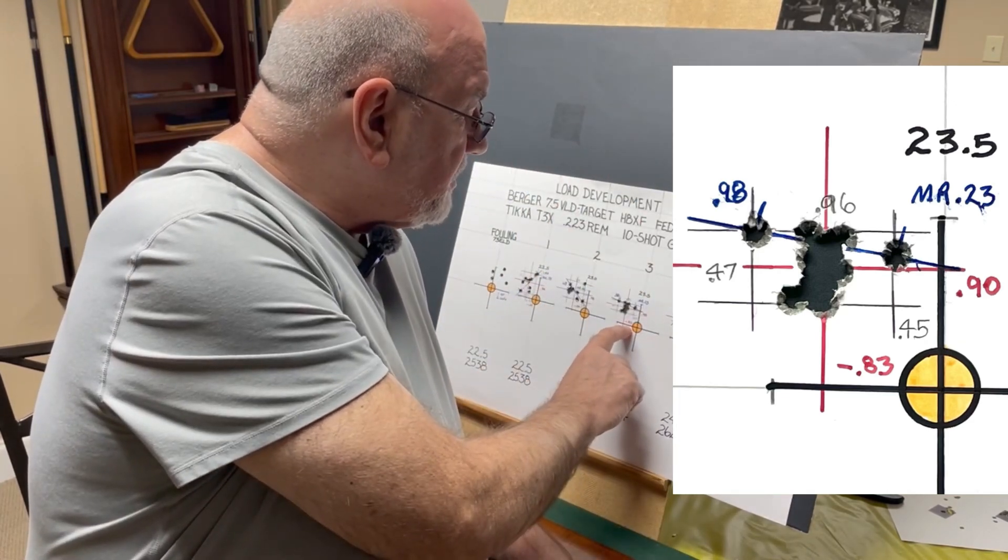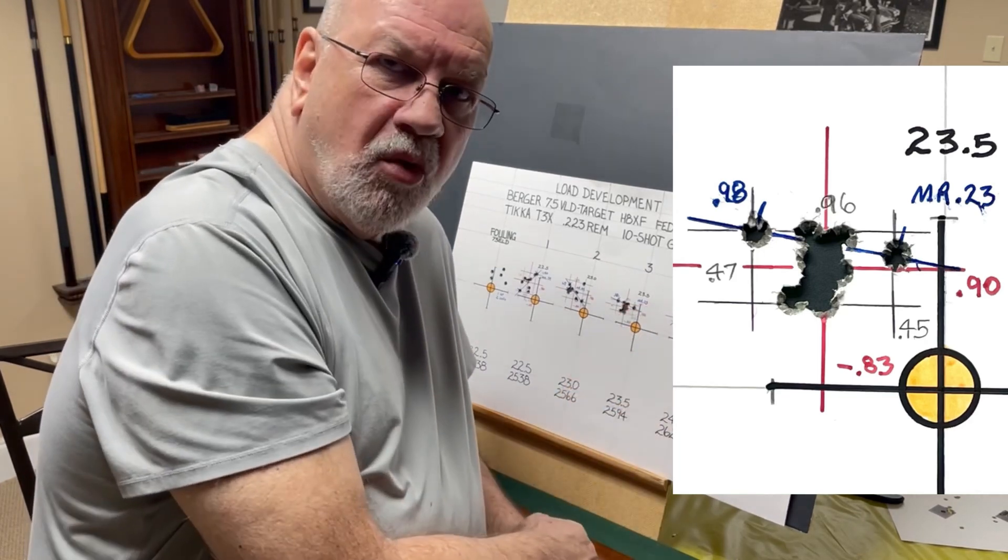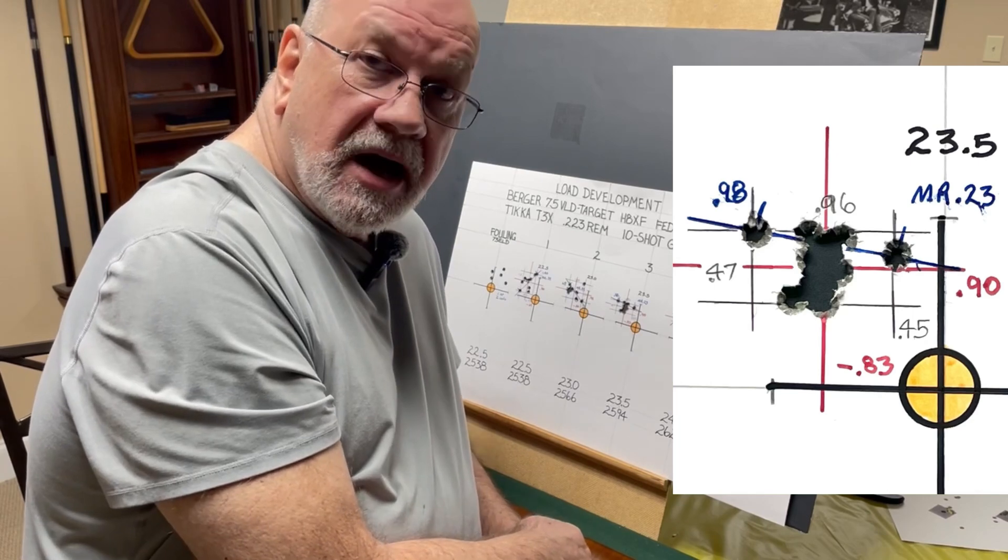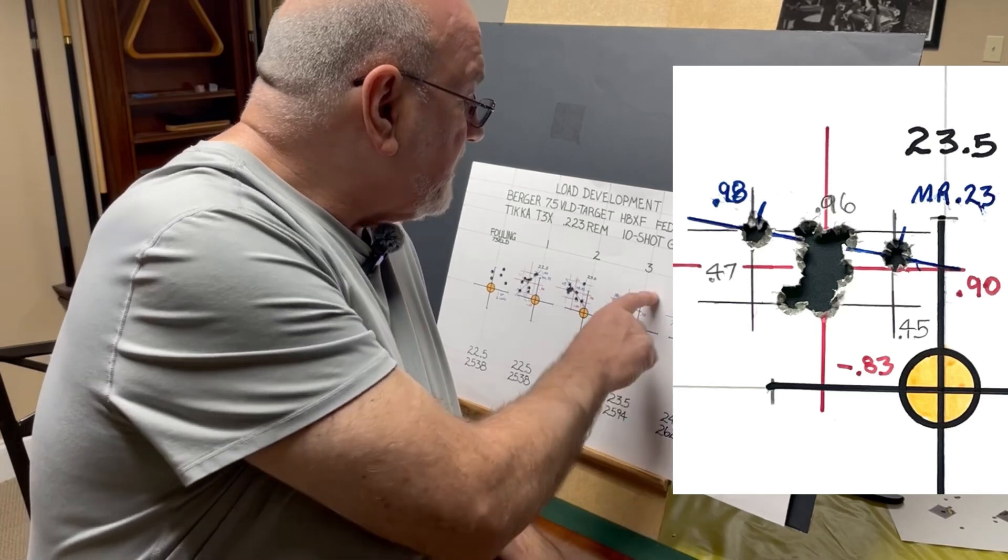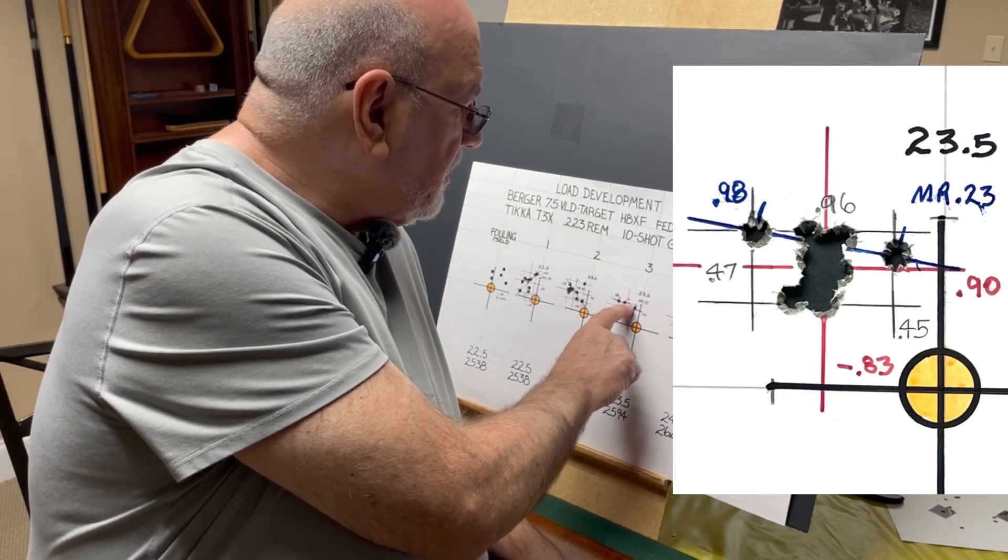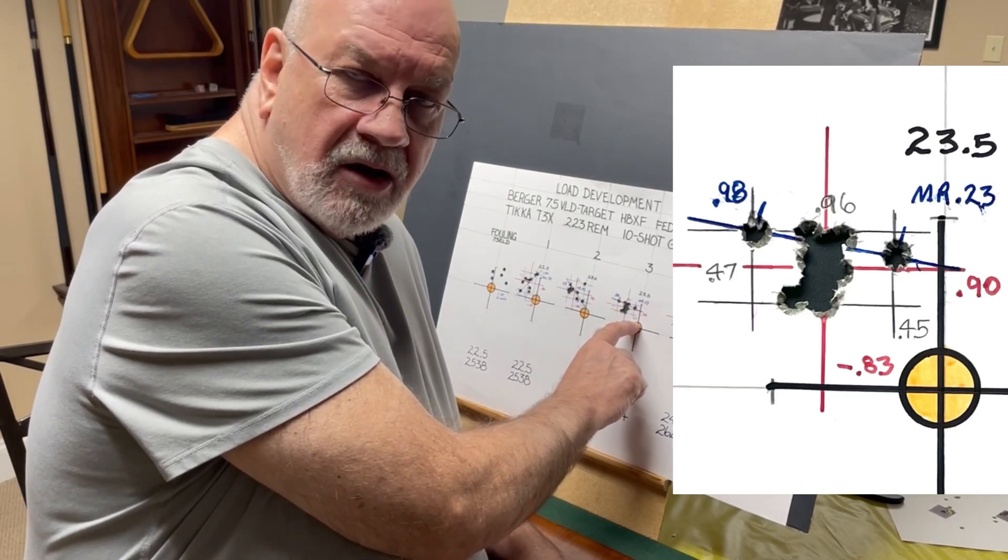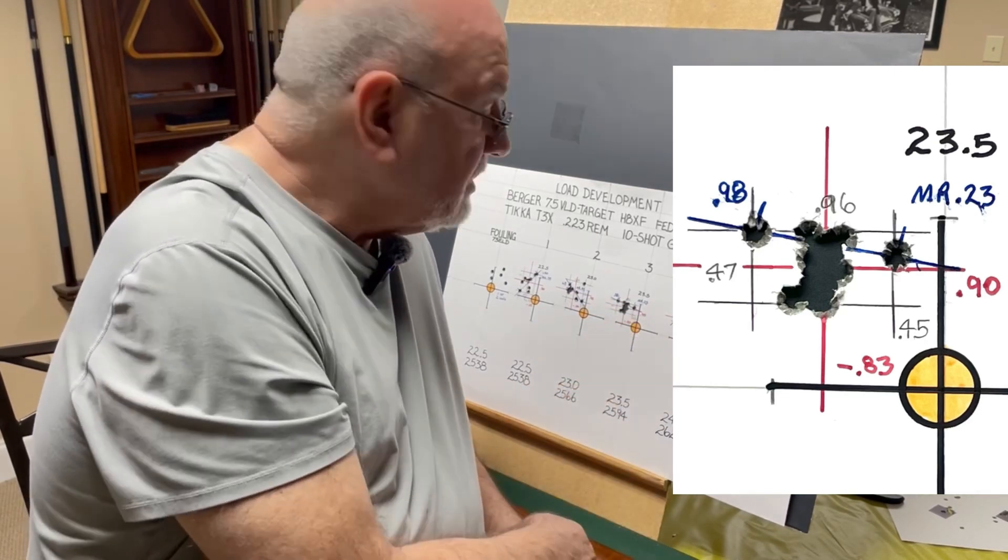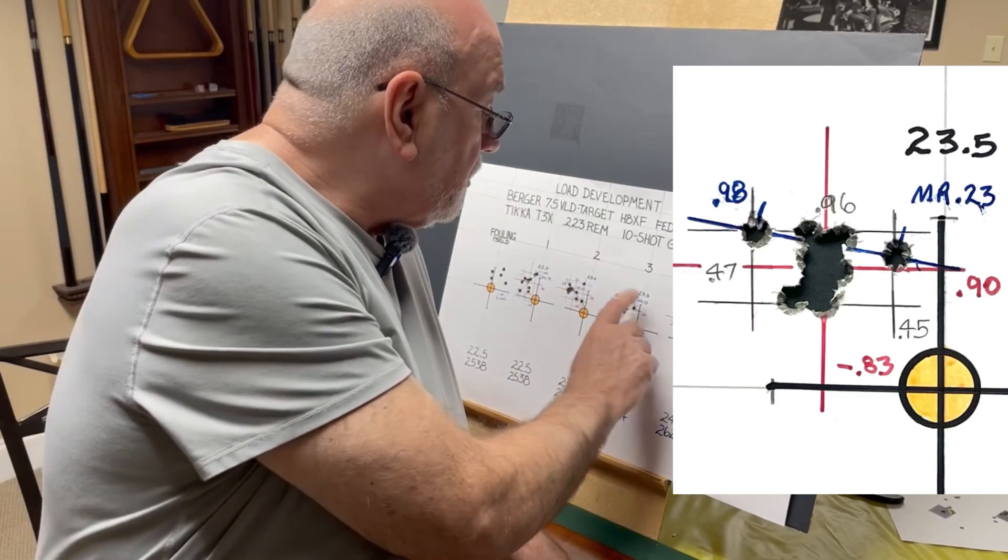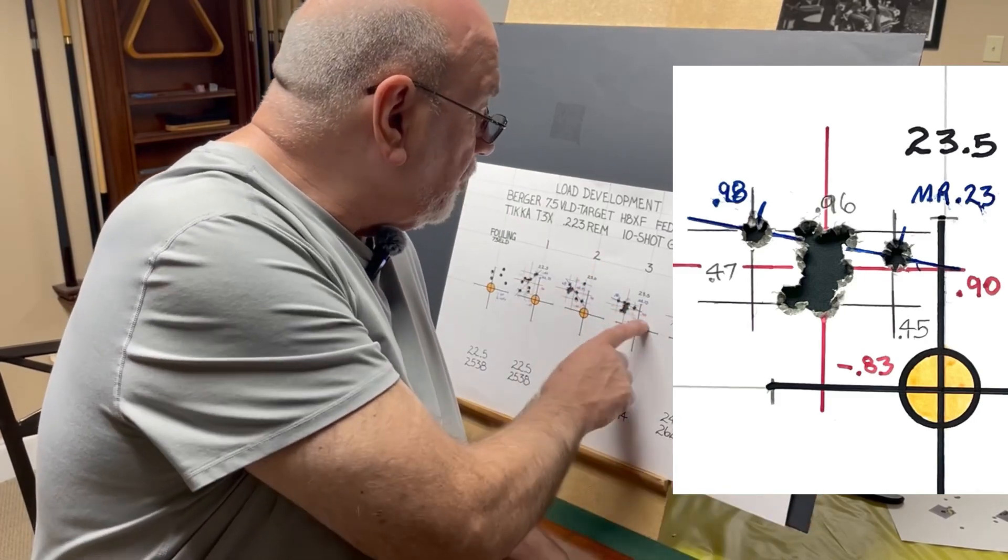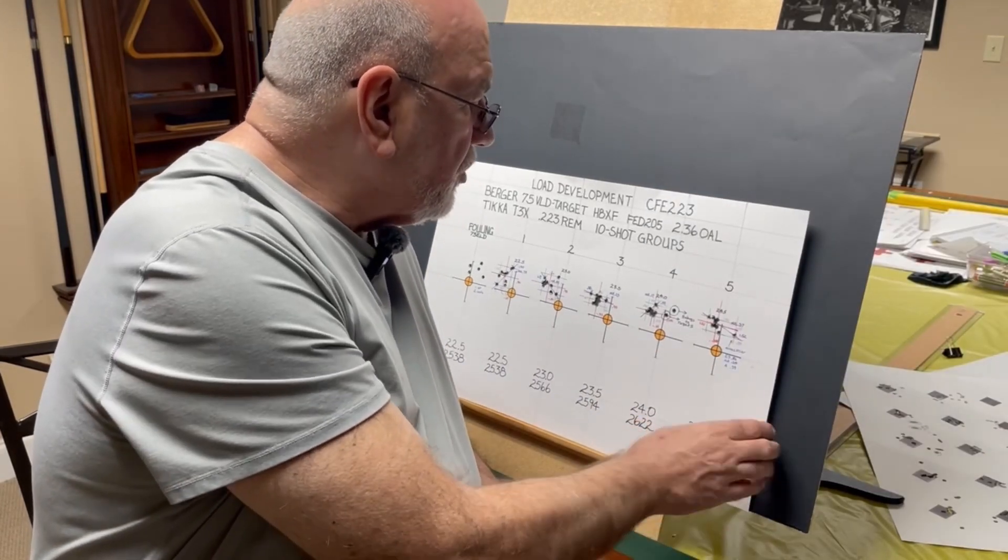We're shooting 0.83 to the left and 0.9 inches high. We have a mean radius of 0.23 which gives you an average group size of 0.46, so we're really starting to tighten up here. That's also confirmed by the area which is 0.96 wide and 0.47 tall, so that gives you an area of 0.45 inches which correlates pretty well to the average group size of 0.46 inches. Really pleased with that, might have to do a little bit more experimenting with these last three charge weights here. But we go on to 24 grains.